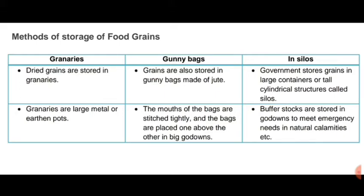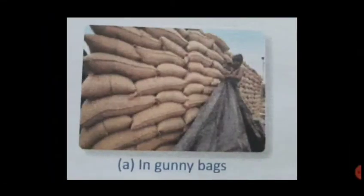There are several methods for storage of food grains: granaries, gunny bags, and silos. Gunny bags are jute bags filled with food grains, stacked in large godowns on wooden platforms — about 10 to 15 cm above the ground and 70 cm away from the walls. Godowns are made free of microbes, insects, and rodents by spraying pesticides. Silos are tall cylindrical containers for bulk storage of grains, used especially by government agencies like the Food Corporation of India.